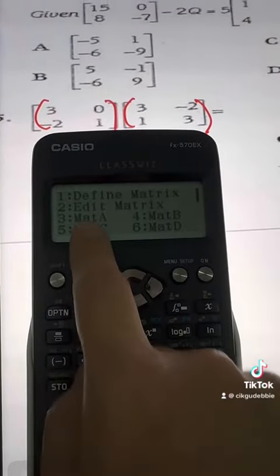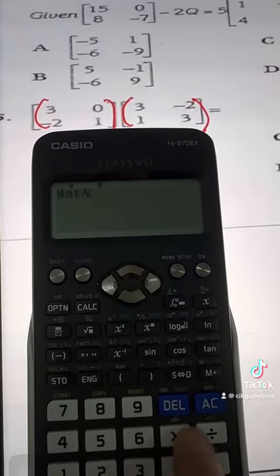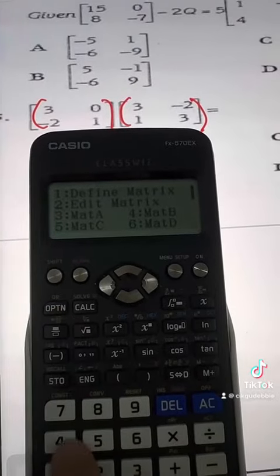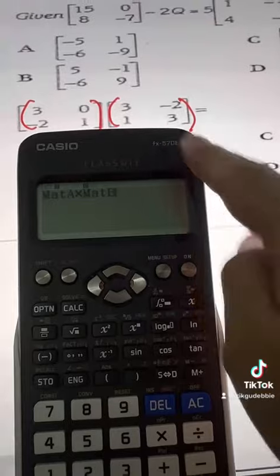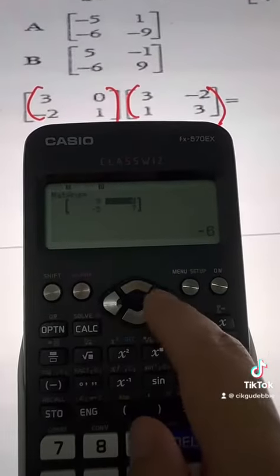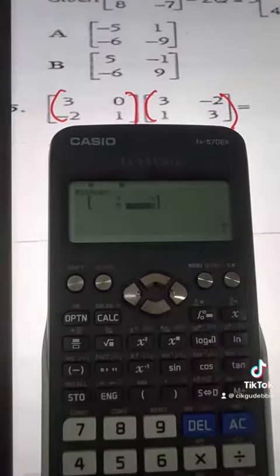Press OPTN for option and select number 3 for matrix A. Multiply with matrix B, which is number 4. Press OPTN for number 4 and press equals to get the answer. The answer will be shown.